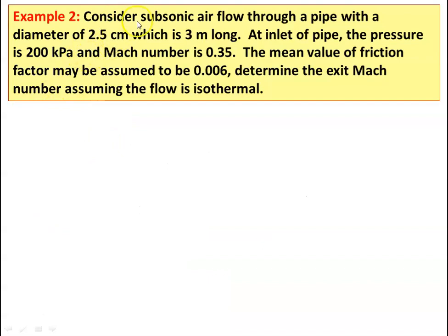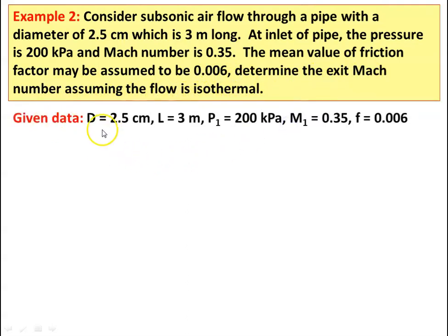Example number 2: consider a subsonic air flow through a pipe with a diameter of 2.5 centimeter, which is 3 meter long. At the inlet, the pressure is 200 kilo Pascal, Mach number is 0.35. The mean value of friction factor may be assumed to be 0.006. Find the exit Mach number assuming the flow is isothermal. Given: diameter = 2.5 cm, length = 3 meter, P1 = 200 kilo Pascal, M1 = 0.35, friction factor = 0.006.